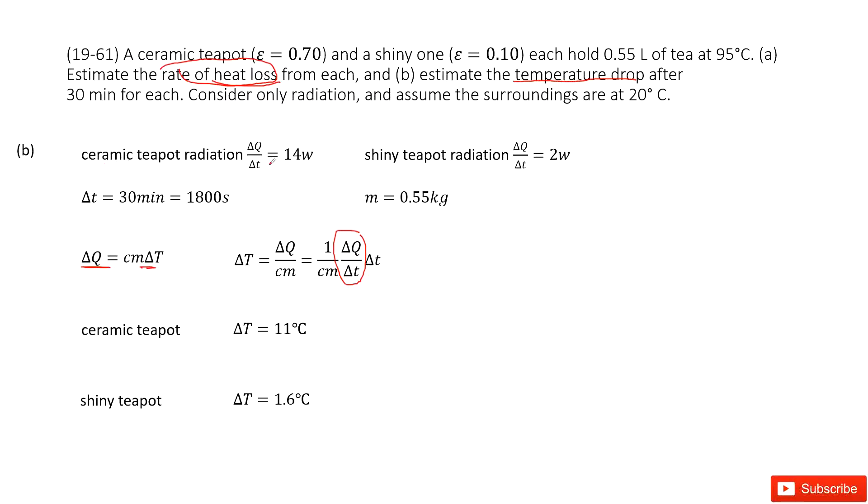For the ceramic teapot, the rate is 14 watts, and for the shiny teapot, 2 watts. Δt is 30 minutes, or 1800 seconds. C is a constant, and m is the mass of the water, which we get from the given volume: 0.55 kg.